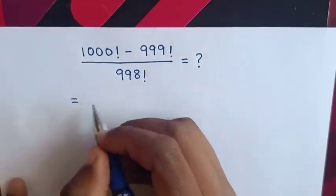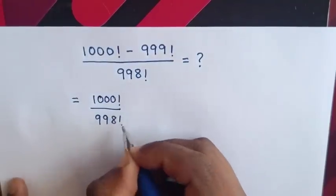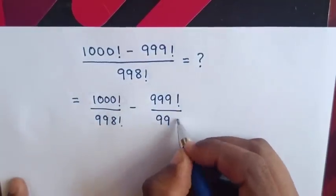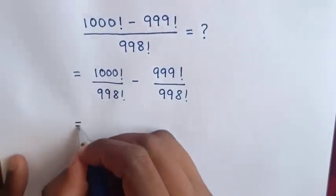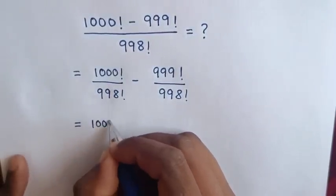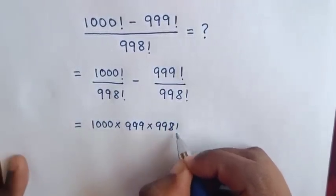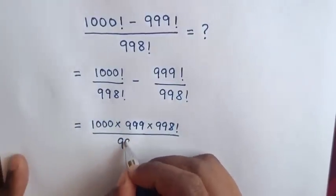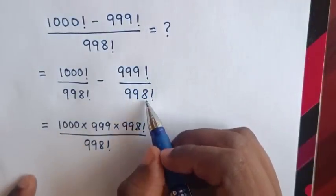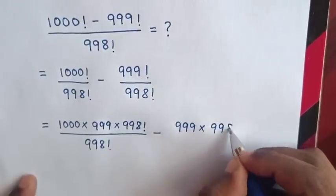So this is equal to 1000 factorial over 998 factorial minus 999 factorial over 998 factorial. Then 1000 factorial over 998 factorial is the same as 1000 times 999 times 998 factorial over 998 factorial, minus 999 factorial over 998 factorial, which is the same as 999 times 998 factorial over 998 factorial.